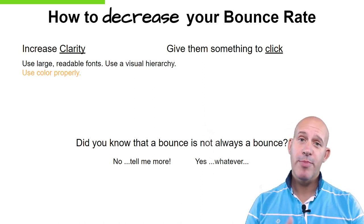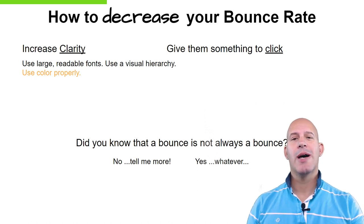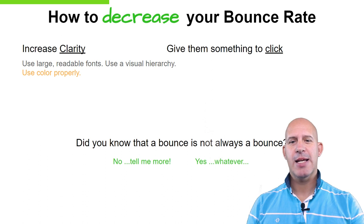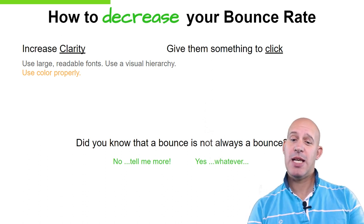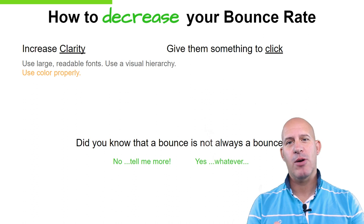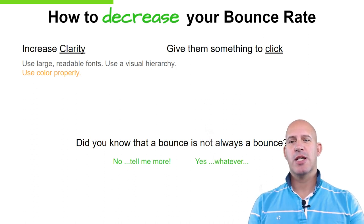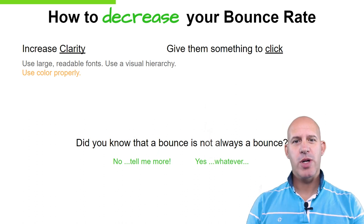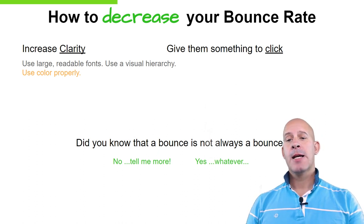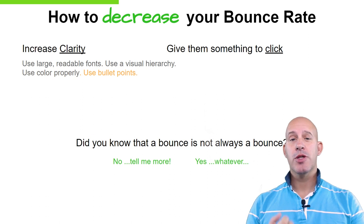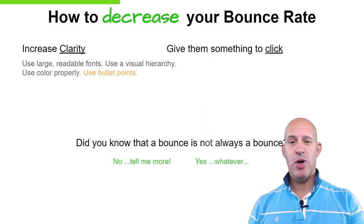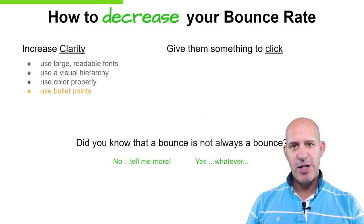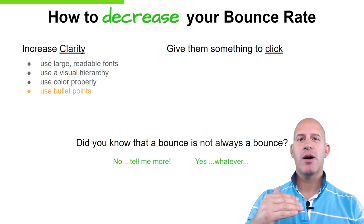Third point: use color properly. You want to have simple colors and use a color scheme to make it nice. You now see that the links are popping out from the page, and you can see how 'how to decrease your bounce rate' is now really important on this page.